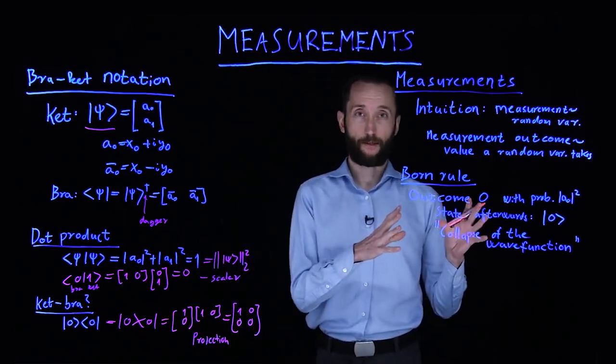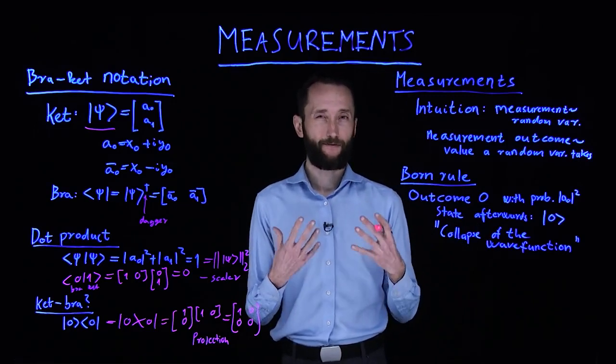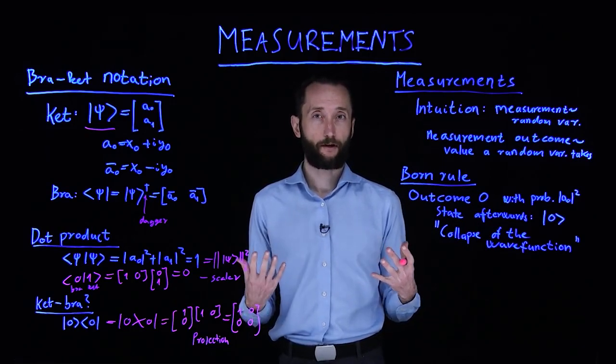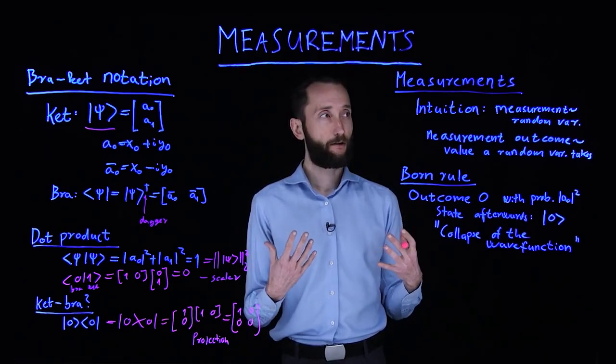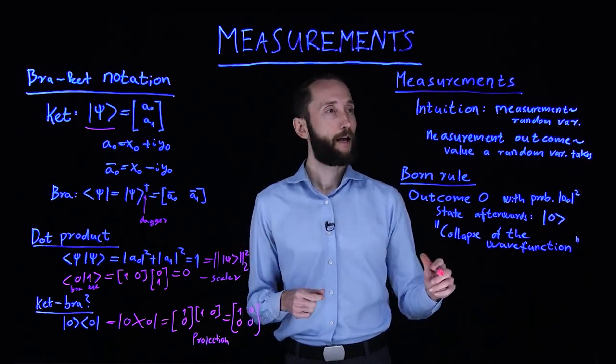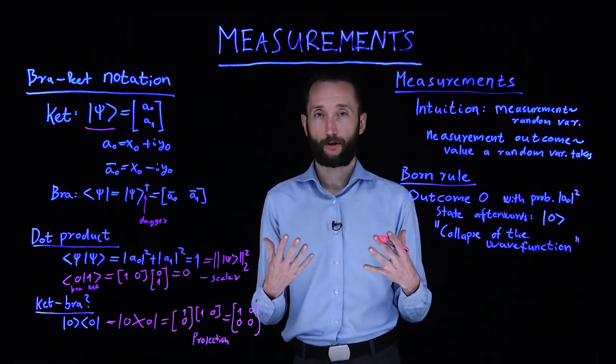Armed with this knowledge, we can start talking about measurements. The intuition is that the measurement is very similar to a random variable in classical probability theory. In classical probability theory, random variables take values, and here measurements take measurement outcomes. You always get a random outcome.